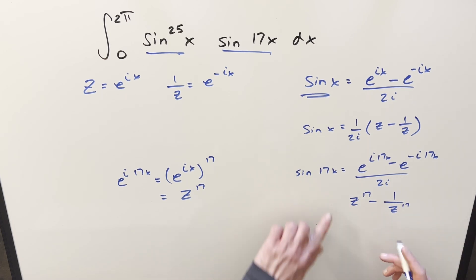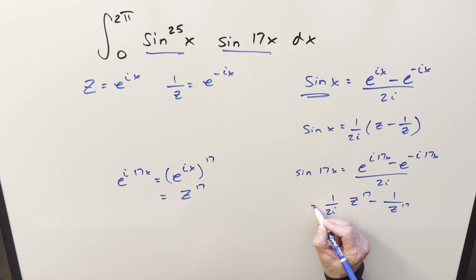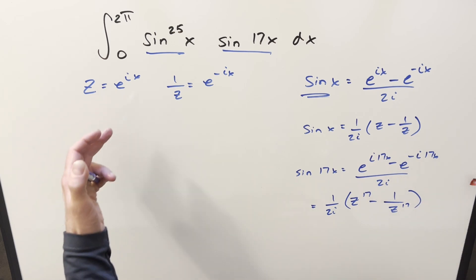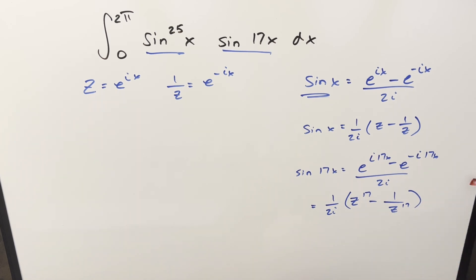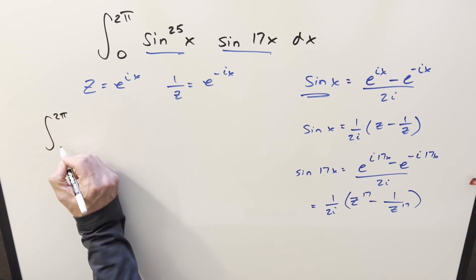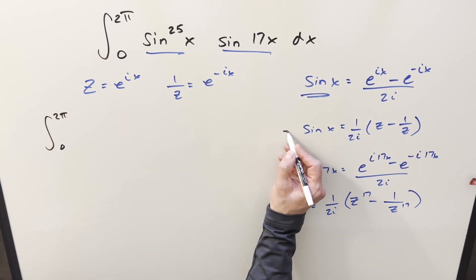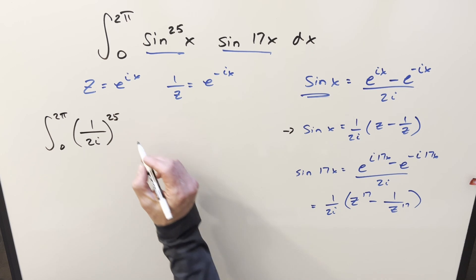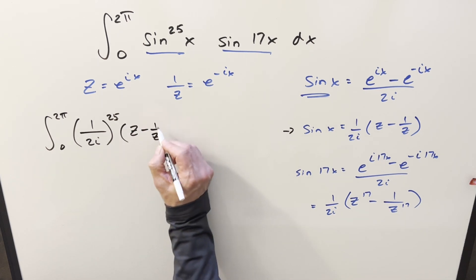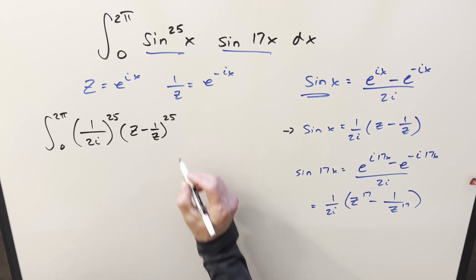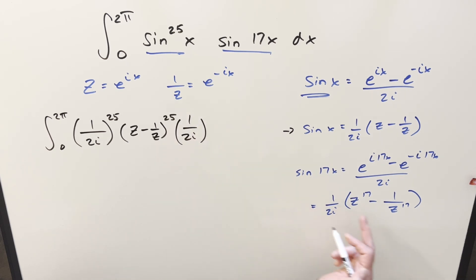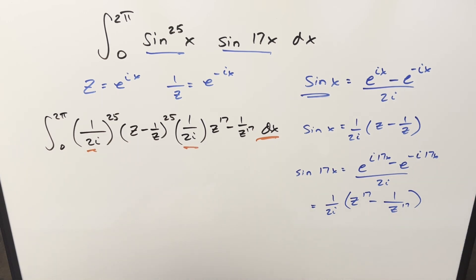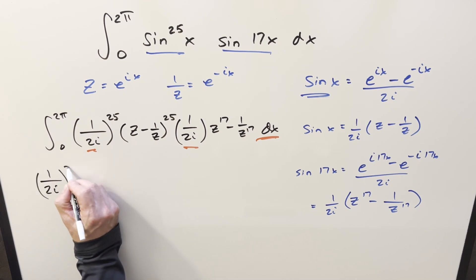Let me make some space because we want this 1/(2i) out front. So how it's going to work is: we've got our integral from 0 to 2π. For sin²⁵, we take the 25th power, so it's (1/(2i))^25 times (z − 1/z)^25. Then plugging in sin(17x), we have another 1/(2i) times that piece. These two constants are exactly the same, so we bring them together as 1/(2i)^26 out front of the integral.